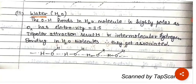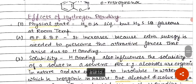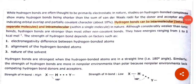In water, the oxygen-hydrogen bonds are highly polar because oxygen is electronegative. The dipolar attraction results in intermolecular hydrogen bonding in water molecules, and they get associated with each other. Intramolecular hydrogen bonding means bonding within the molecule — the hydrogen atom and electronegative atom are present in bonds belonging to the same molecule. Intermolecular means between separate molecules, and intramolecular means within a single molecule.